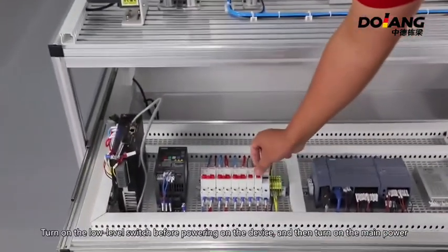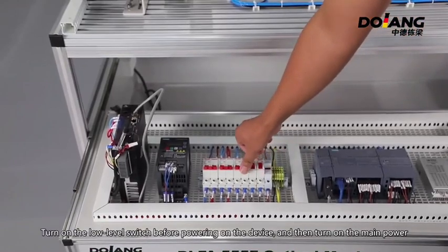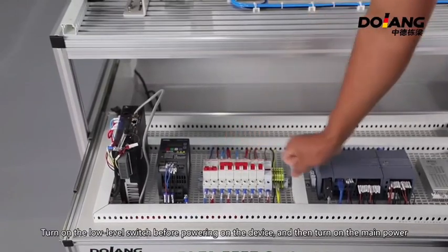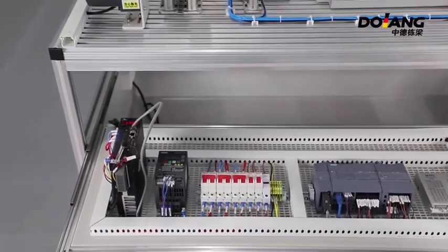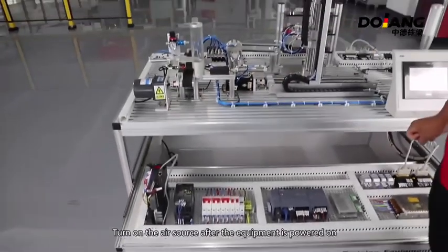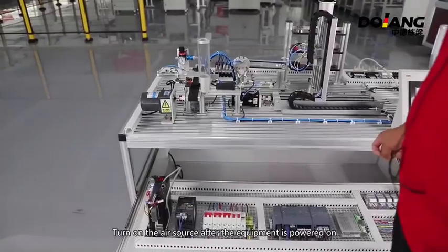Turn on the low-level switch before powering the device and then turn on the main power. Turn on the air source after the equipment is powered on.